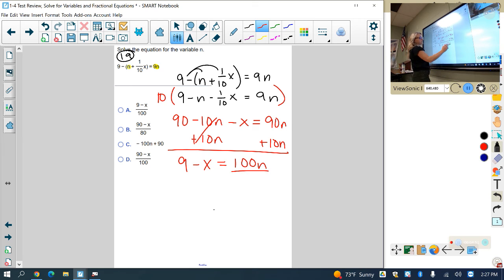And then I'm going to divide by 100 to get n by itself. So I'm left with n equals 9 minus x over 100.